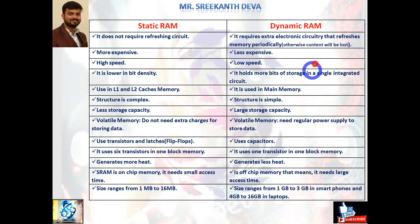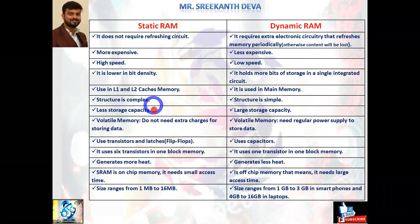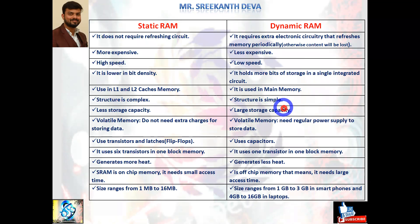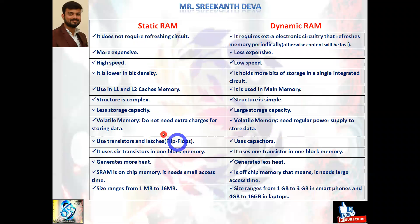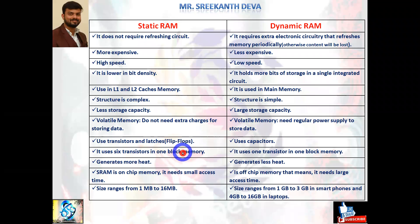SRAM comes under cache memory, but Dynamic RAM comes under main memory. Static RAM has less storage capacity; Dynamic RAM has more storage capacity compared to cache. SRAM does not need extra charges for storing data, but DRAM requires additional power supply. SRAM uses transistors and latches like flip-flops; DRAM uses capacitors. SRAM uses nearly six transistors per memory block; DRAM uses one transistor per memory block. SRAM generates more heat; DRAM generates less heat.